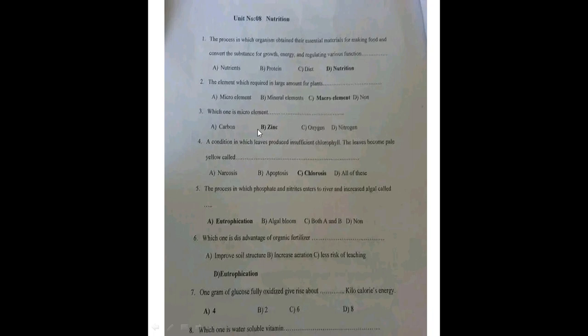A condition in which a leaf produces insufficient chlorophyll is called chlorosis. Under this condition the leaf becomes very pale and yellow colored.